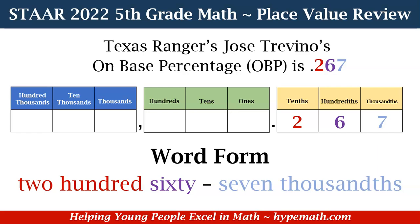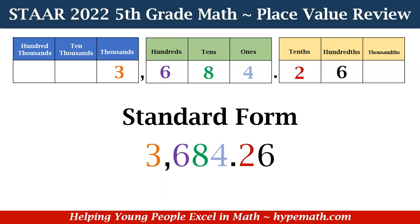Let's look at another example. We have standard form — our number is 3,684 and 26 hundredths. Whenever we have a whole number and a decimal, we say 'and' to represent where the decimal point goes. We didn't say 'and' for our first sample problem because we didn't have a whole number — all we had was a decimal. So whenever we have a whole number and a decimal value, when we get to that decimal point, we say the word 'and,' and then we say our decimal value. So again, in standard form, our number is 3,684 and 26 hundredths.